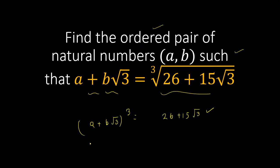So I open this. a cubed plus 3 times a squared b root 3, plus 9ab squared plus 3b cubed root 3. So this is the same way, and it is equal to this.